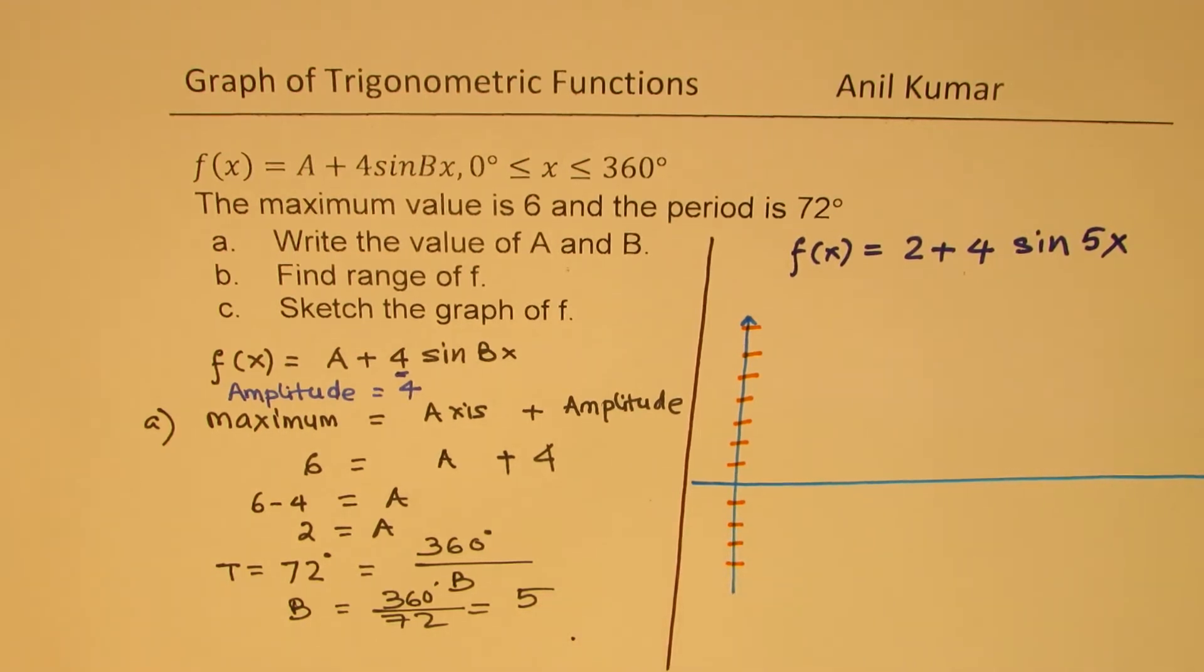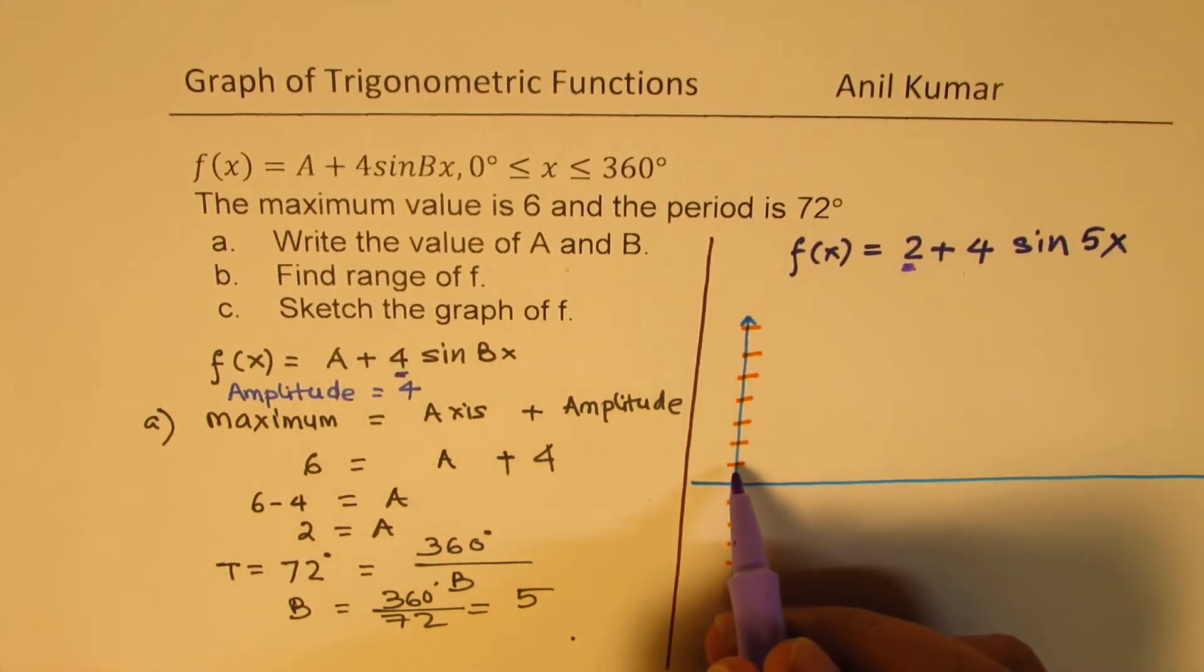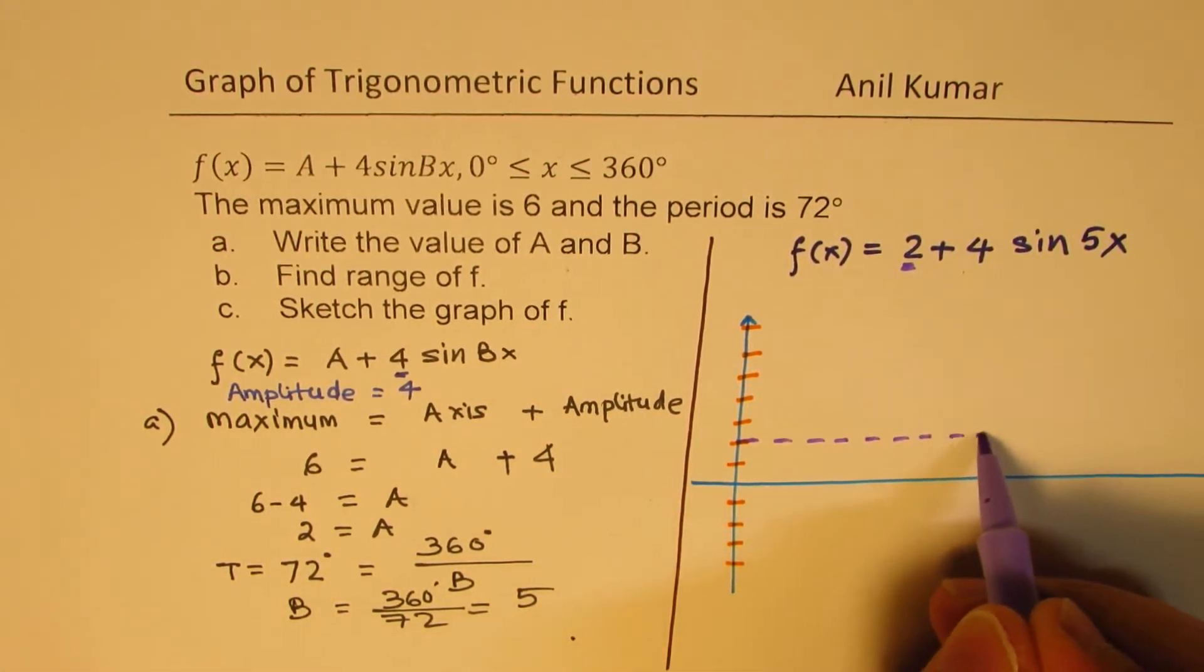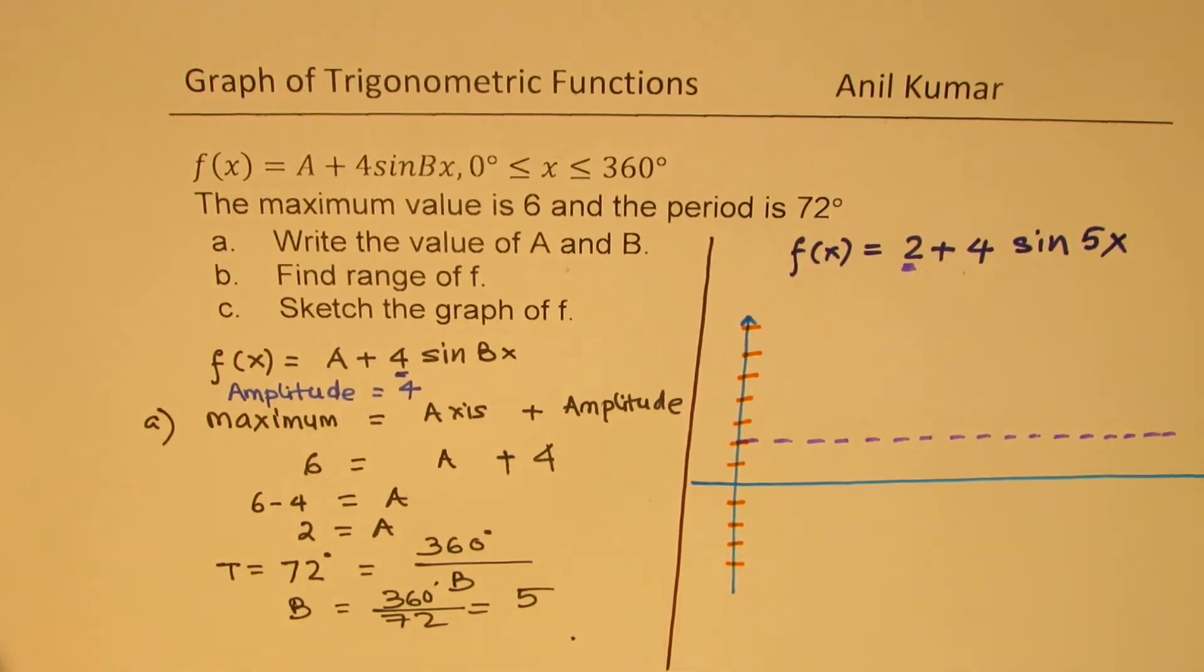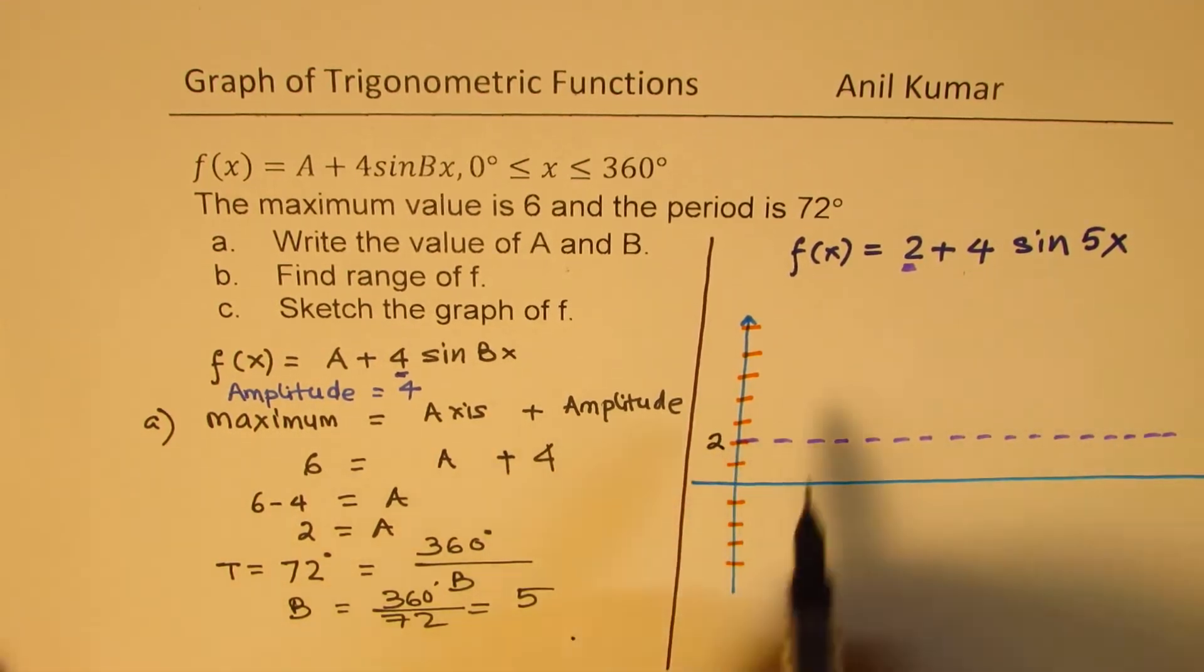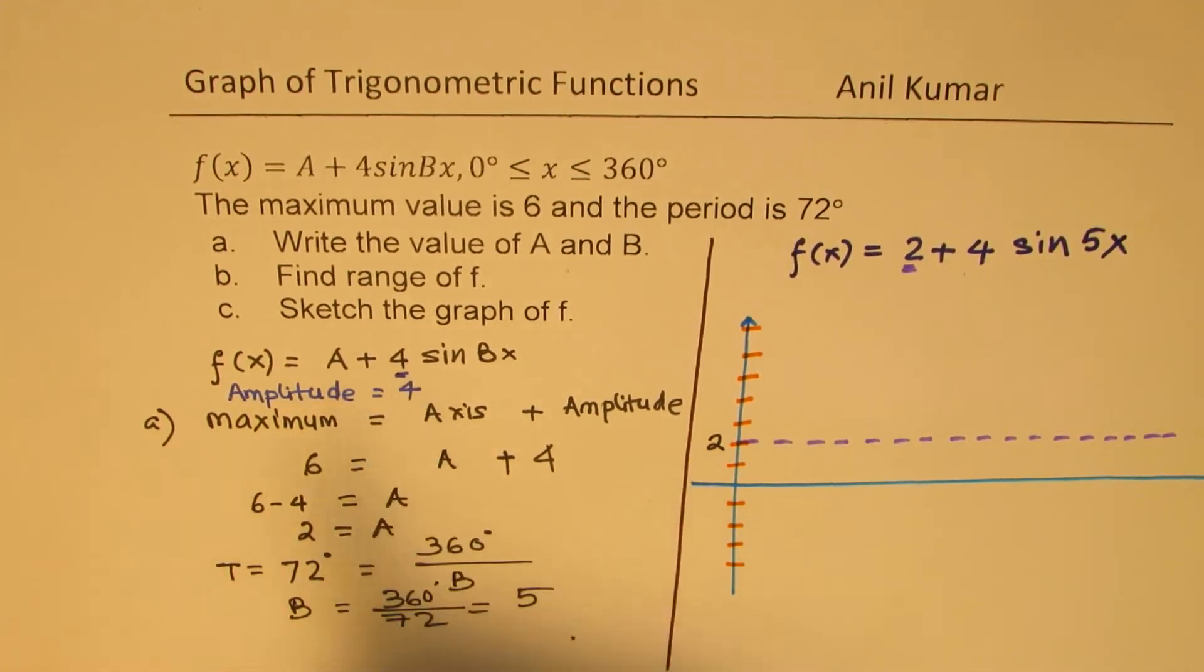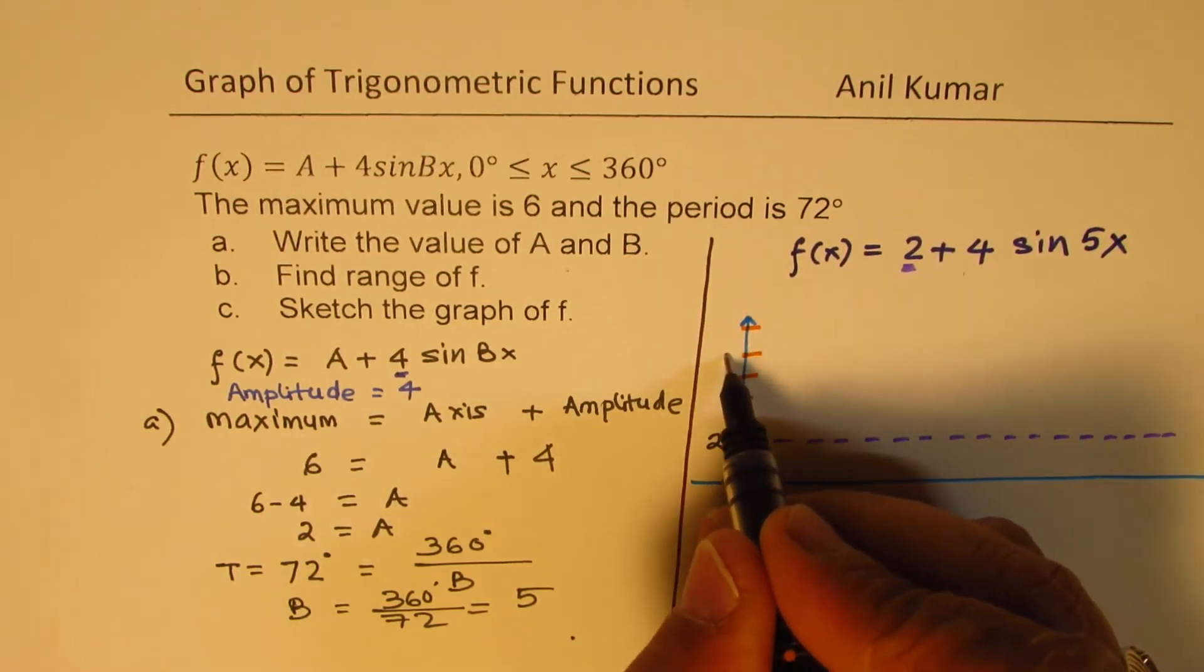Now, when we say that the axis is 2, it basically means what? So, 1, 2. So, we'll draw a line here showing the axis, principal axis for the sine graph. Is it okay? So, this is at 2. Now, amplitude is 4. That means 4 units above, 2, 3, 4, 5, 6, so it'll be right there.